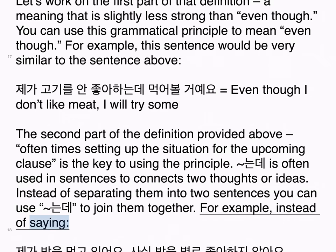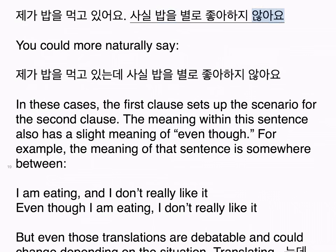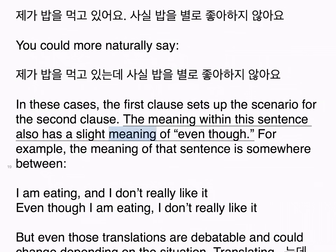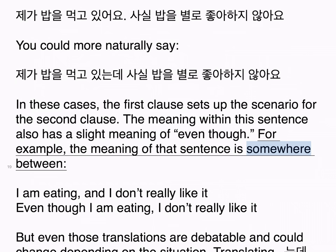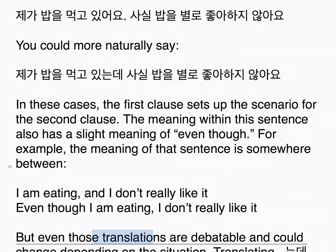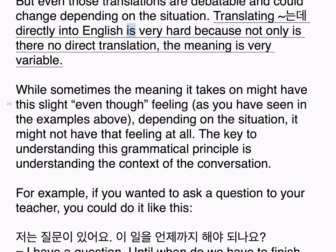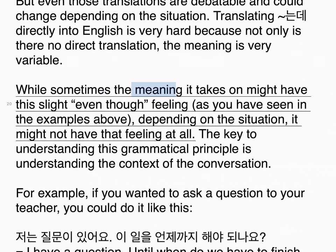For example, instead of saying 제가 밥을 먹고 있어요 / 사실 밥을 별로 좋아하지 않아요, you could more naturally say 제가 밥을 먹고 있는데 사실 밥을 별로 좋아하지 않아요. In these cases, the first clause sets up the scenario for the second clause. The meaning within this sentence also has a slight 'even though' feeling — somewhere between 'I am eating' and 'even though I am eating, I don't really like it.' But even those translations are debatable and could change depending on the situation. Translating 는데 directly into English is very hard because not only is there no direct translation, the meaning is very variable.